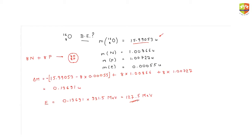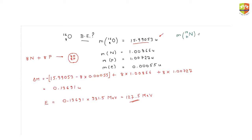Now let's do a similar numerical. You need to be comfortable with calculation in this chapter, so here is another one: find the binding energy of Nitrogen-14. The mass of the nitrogen atom is given as 14.00307 units. The mass of neutron, proton, and electron are already given.